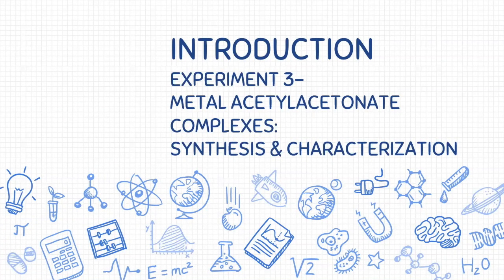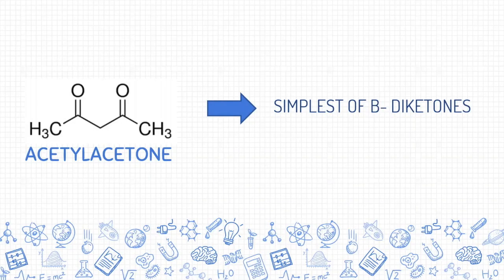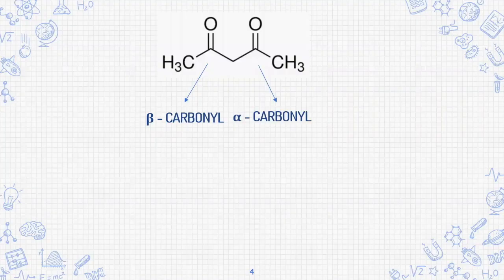I will present the introduction part of experiment 3. Acetylacetone is the simplest of the β-diketones. The presence of β-carbonyl groups with at least a proton on the intermediate carbon allows a keto-enol tautomerism to be operative in β-diketones.